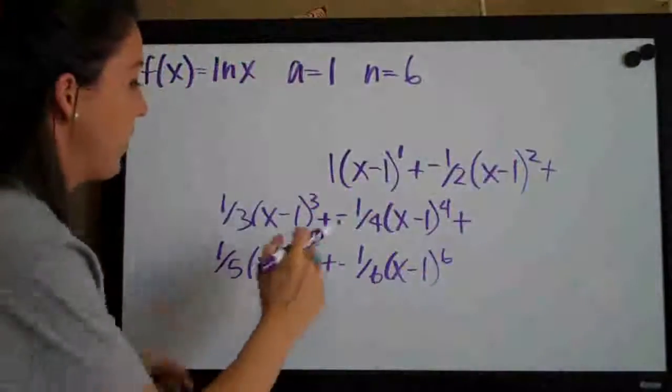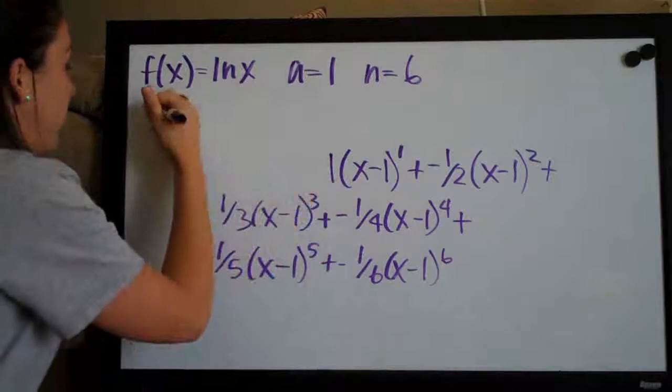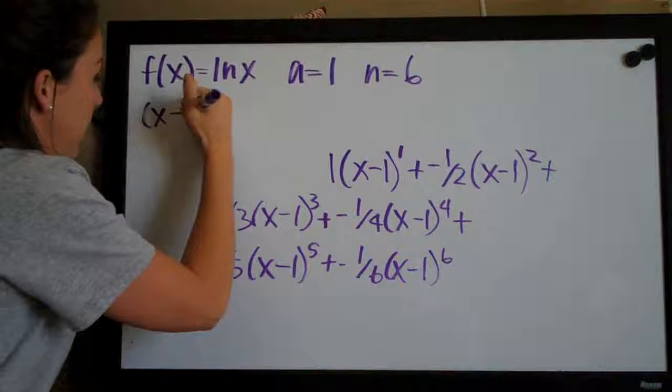And then we have x minus one to the one and multiply by one. So that's just actually going to end up, right? x minus one.